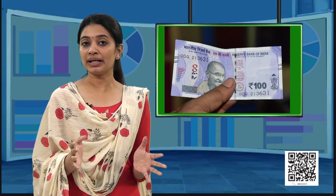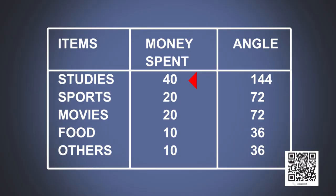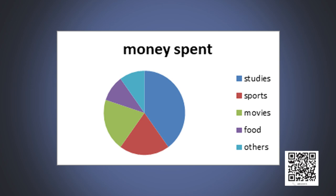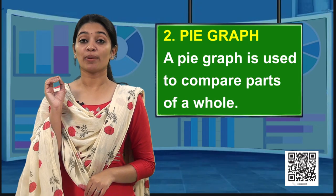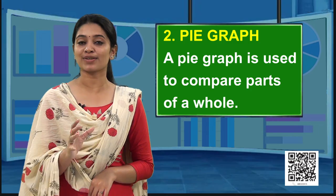Let's look into pie chart. Assume your mom gave you rupees 100 as pocket money and you spend it as follows: 40 rupees for studies, 20 rupees for sports, 20 rupees for movies, 10 rupees for food and 10 rupees for other expenses. You have 100 rupees. That means you have a whole and you are dividing this whole among different types of expenses. This circle represents the whole. So a pie graph is used to compare the parts of a whole.